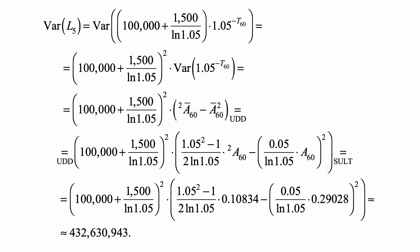The standard formula is i over δ times A₆₀ equals a̅₆₀ under UDD, under the uniform distribution of death assumption.